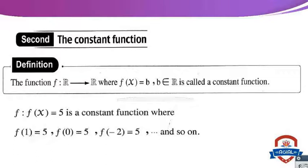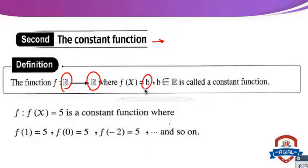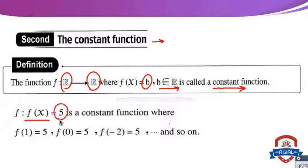Number 2: the constant function — it is very easy. A constant function is a function from the set of real numbers to the set of real numbers, where f(x) equals b, and b belongs to the set of real numbers. It is called a constant function. For example, f(x) equals 5 is a constant function, where f(1) equals 5, f(0) equals 5, and f(−2) equals 5 for any real number x.